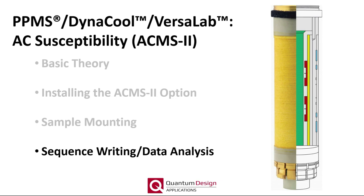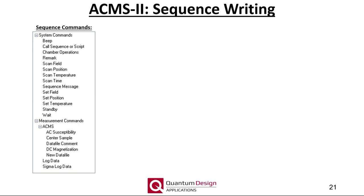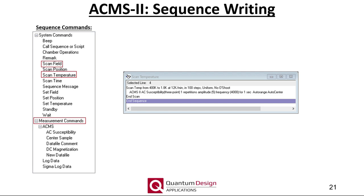The final portion of this webinar will be focused on sequence writing and data analysis. Here are the sequence commands available with the ACMS2 option activated. Note, unlike for the VSM option, there are no preset moment versus field or moment versus temperature sequence commands. Instead, one must build these loop sequences using the scan temperature or scan field system commands, as shown here.